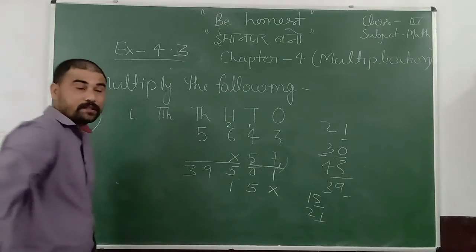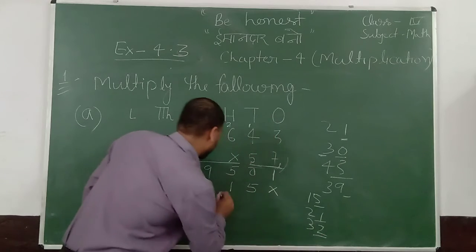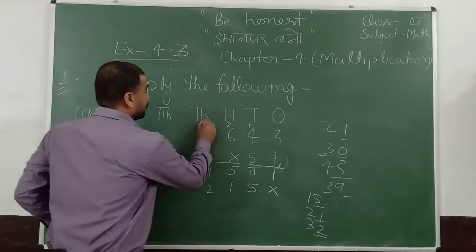5 into 6 is 30. 30 plus 2 is 32. Put 2 here. And 3 is carry.